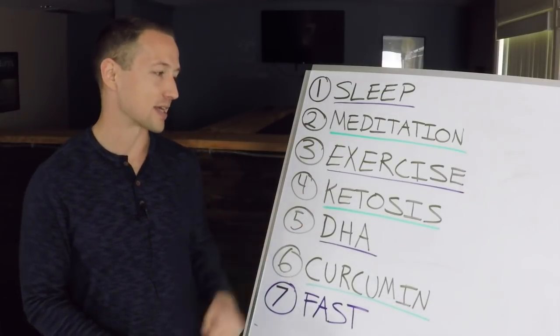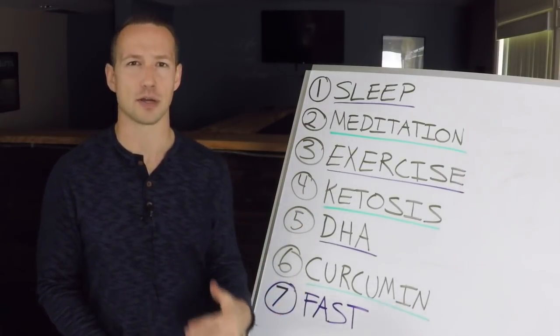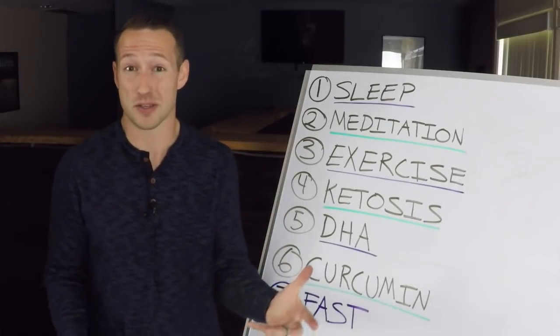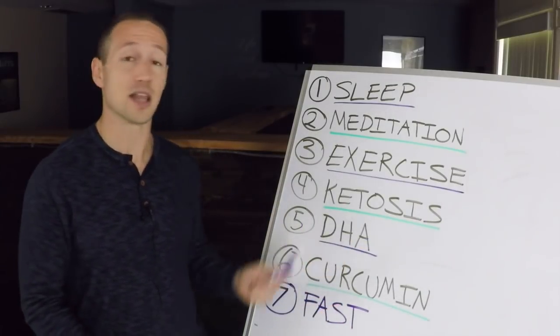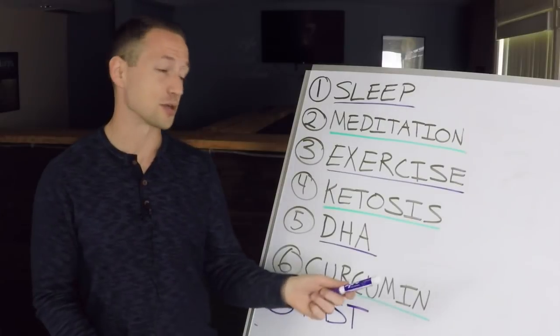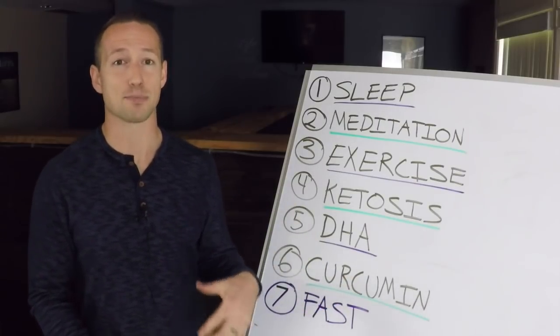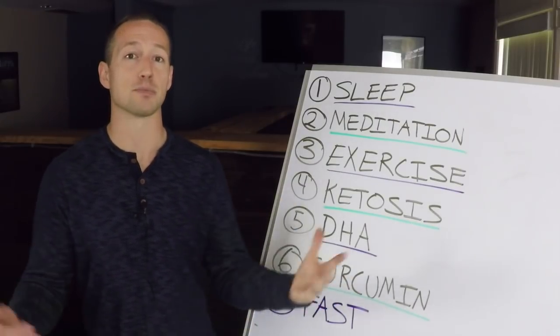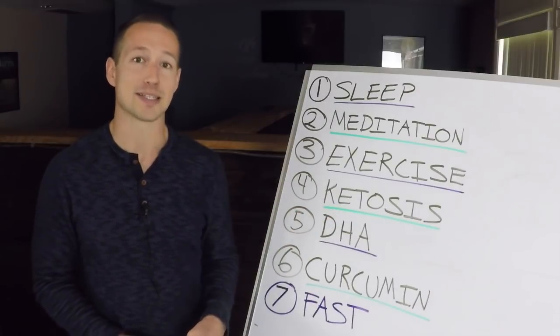And a lot of people notice when they're in a state of ketosis that they are more clear, they're able to be more productive, their brain just works better. It's one of the main reasons I fell in love with ketosis. It's been also shown to reduce inflammation in the brain, improve the production of GABA, which is going to help improve your brain's neuroplasticity.